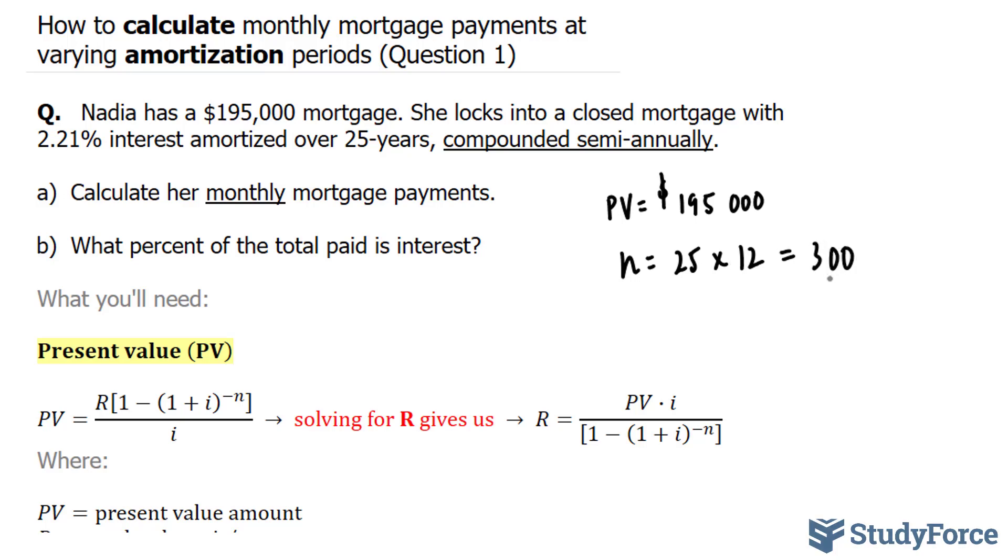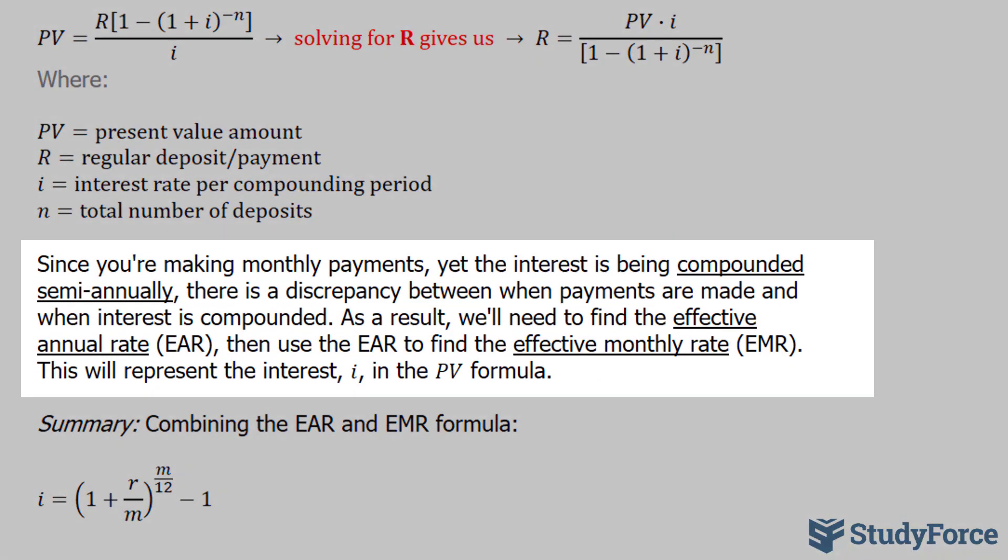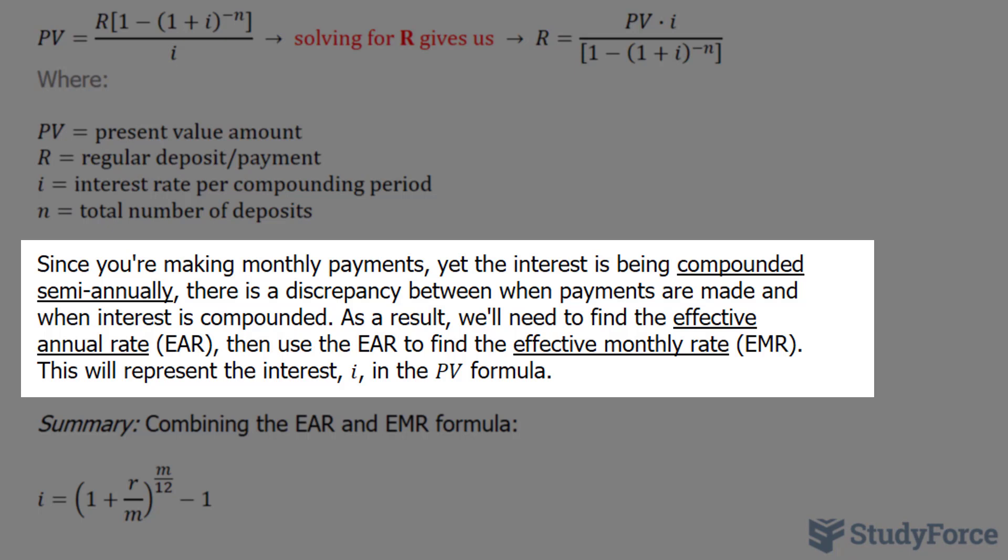Now the tricky part is defining the i. i represents the interest rate per compounding period. Now the reason why I say that it's tricky is, since you're making monthly payments, yet the interest is being compounded semi-annually, there's a discrepancy between when the payments are made and when the interest is compounded. As a result, we need to find the effective annual rate (EAR), then use the EAR to find the effective monthly rate. And this will take into account the discrepancy.